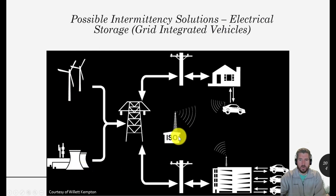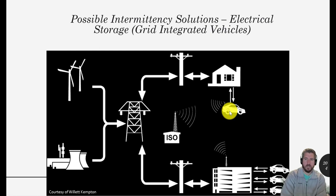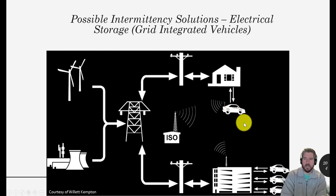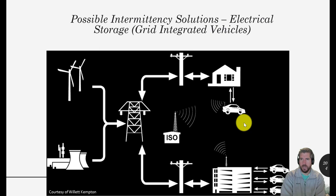The ISO can communicate with an electric vehicle in a house and tell it when to charge. For example, on a really sunny spring day when nobody's using air conditioning and electricity is plentiful, you'd want to charge all the cars you can. The real power of vehicle-to-grid is that they can also draw some energy out of the car — as long as the owner is okay with it — to help balance the grid when there isn't enough electricity being produced. They might say, 'We'll pay you five dollars if we can just draw a little bit of your battery.'